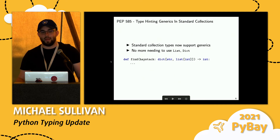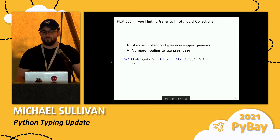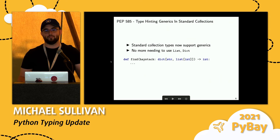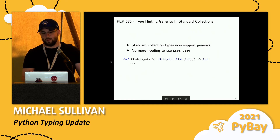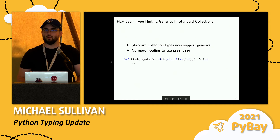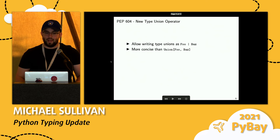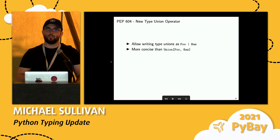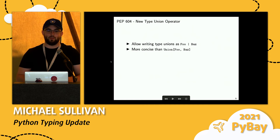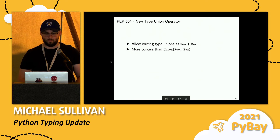Another thing is PEP 585, which adds type hinting to standard collections. Previously, you needed to import everything from the typing module and write your lists and dicts with uppercase List and Dict, but now you can just write regular lowercase dict and str and have the types there. Additionally, for union types, you can now just write them with an OR — so you can write foo | bar instead of having to type out Union[foo, bar] with something you imported from typing.